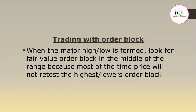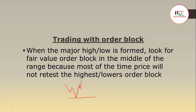When the major high or low is formed, look for the fair value order block in the middle of the range, because most of the time price will not retest the highest or lowest of the order block. So if price trades to the area of support and gives you a first move, then trades to support and gives a very big bounce — as price is moving higher, most of the time it will be creating short-term swings, then continue higher. So when you identify an area like this where price met the major low or high, you look for the order blocks within this range — the fair value.